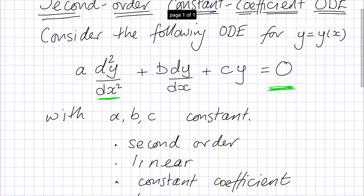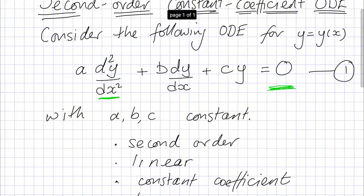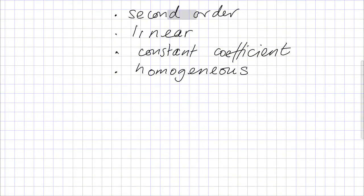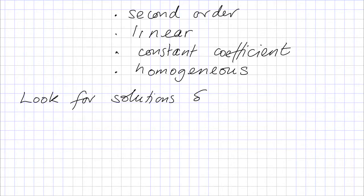Let's label this equation 1 — this is the equation we'd like to solve. So how are we going to do that? Well, we're going to make a guess — we're going to make an ansatz. That means we're going to look for solutions of the form y equals e to the mx.